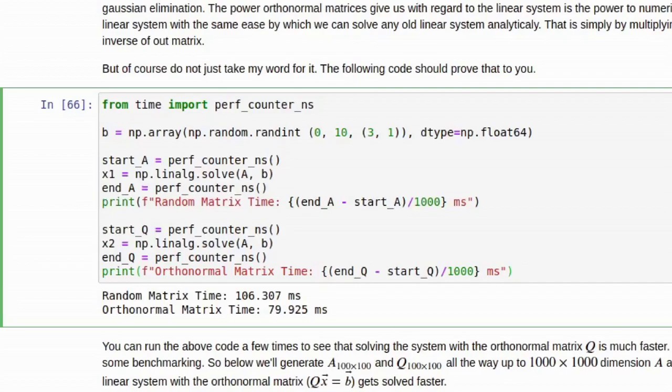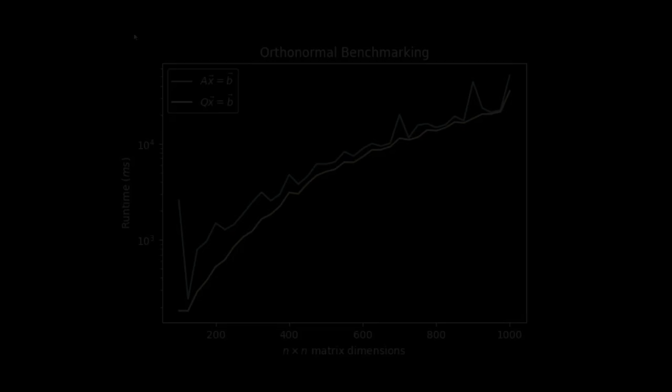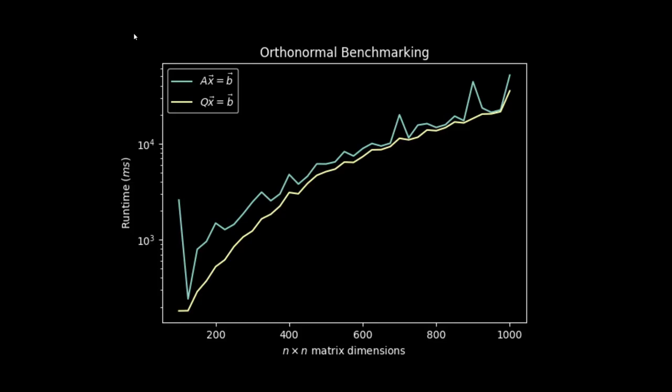Right here you can see already running this once that the time it takes to solve the random system Ax equals b is significantly slower than using the orthonormal matrix. We can run this a few more times though. So you can see running it again the orthonormal matrix time is significantly faster again. Running it a third time you can see it's still much much faster.